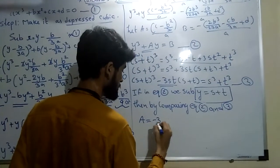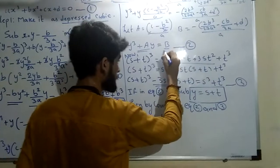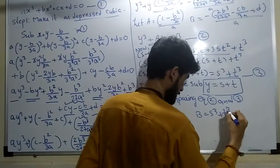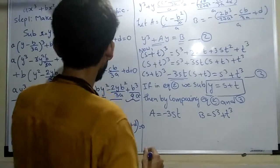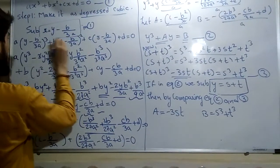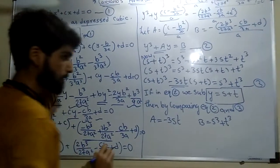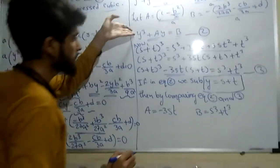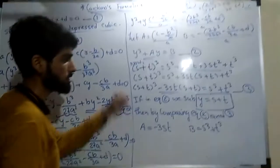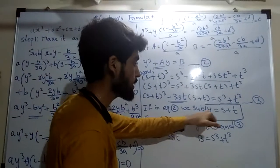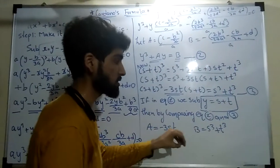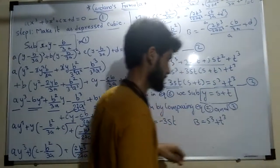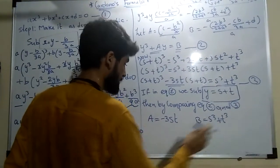From the comparison, we find that a equals minus 3st and b equals s³ plus t³. Recall that first we substituted x equals y minus b by 3a to get a depressed cubic equation in y. Now, after substituting y as s plus t, we got relations between s and t. Our aim is to find the values of s and t using these two equations.